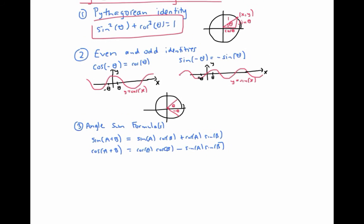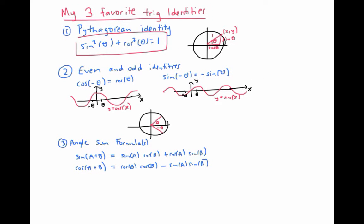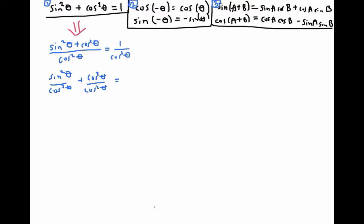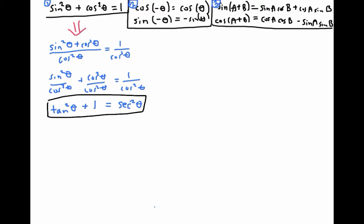Those are the three trig identities everyone should memorize. Next, I'll show you how to derive more identities from these three. Starting with the Pythagorean identity, if we divide both sides by cosine squared theta, we can break up the fraction to get sine squared theta over cosine squared theta plus one equals one over cosine squared theta. That simplifies to tan squared theta plus one equals secant squared theta, since secant theta is defined as one over cosine.